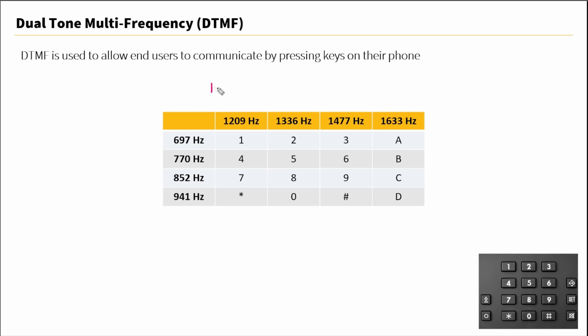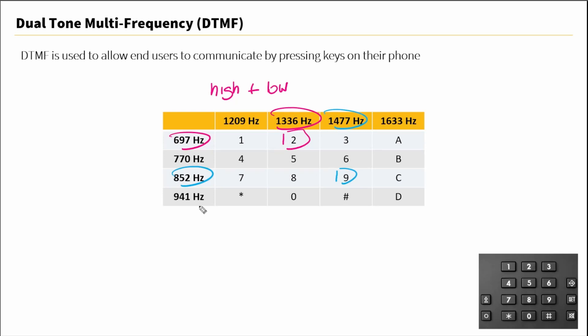DTMF is the combination of two tones — high-frequency tones plus low-frequency tones. For example, to represent the number 2, these two tones are combined. For the number 9, these two tones are combined. Based on the frequency of that combined tone, that's how the system via DTMF knows what digit was pressed.